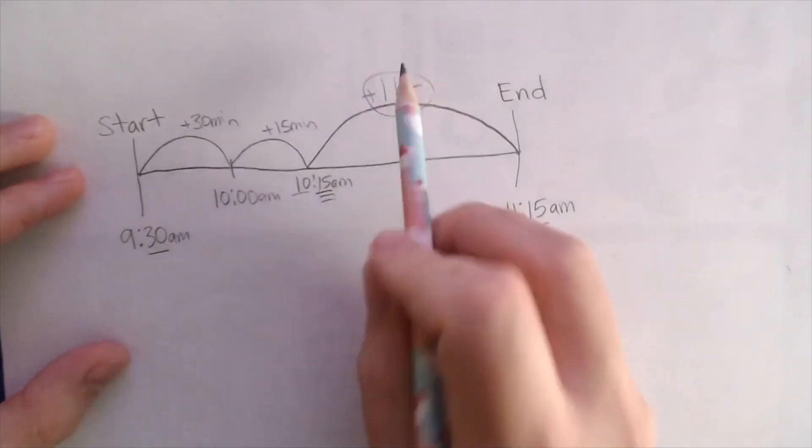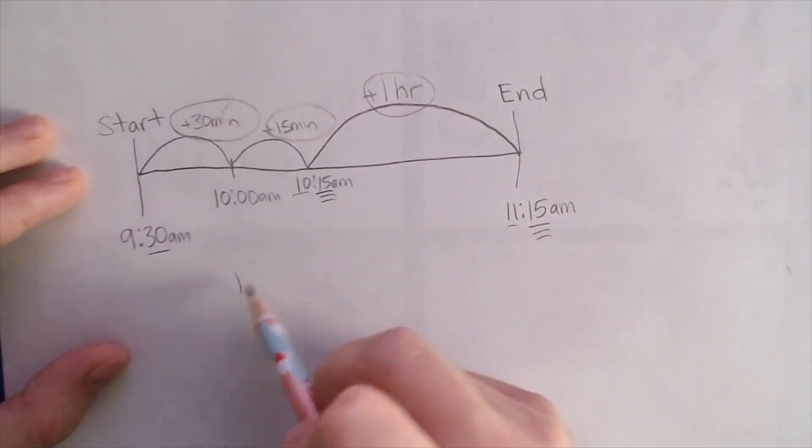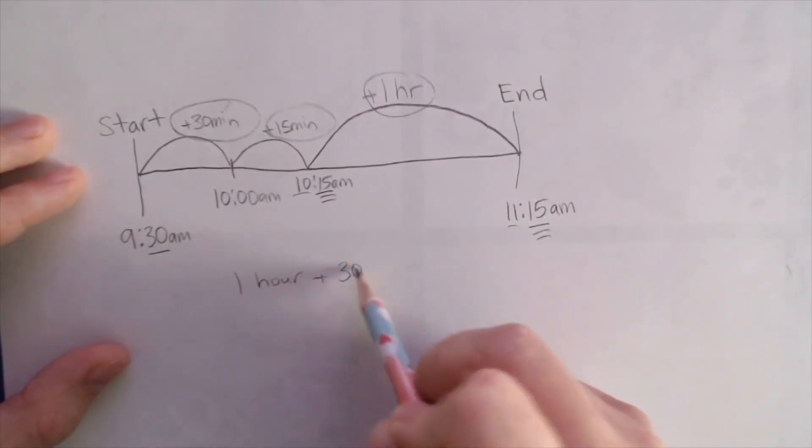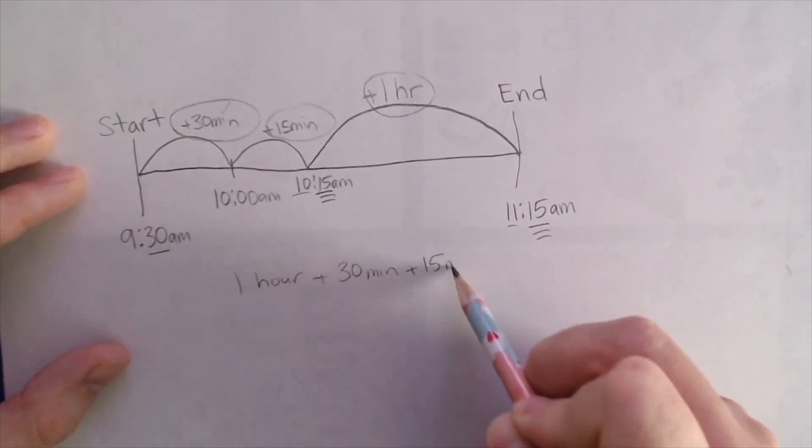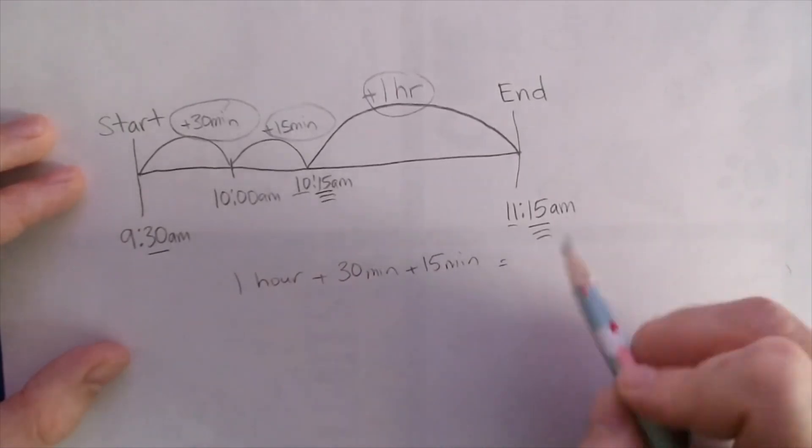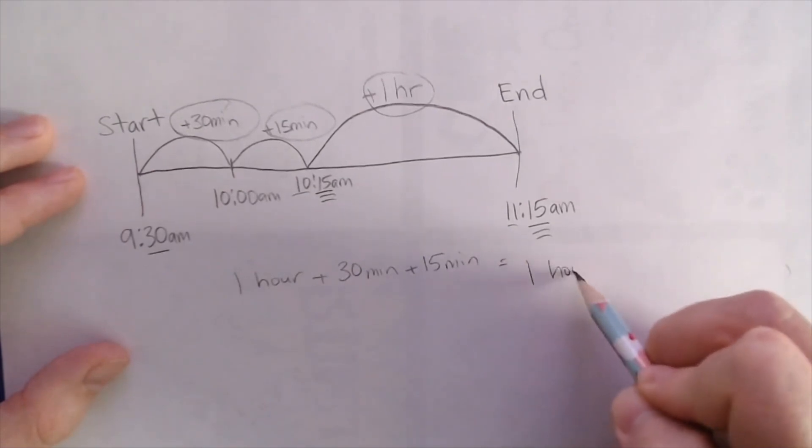So, what I'm going to do next is then take all of the time that I added and add it up. One hour plus 30 minutes plus 15 minutes. That's all the parts I added. All together equals one hour and 45 minutes. And that is my elapsed time.